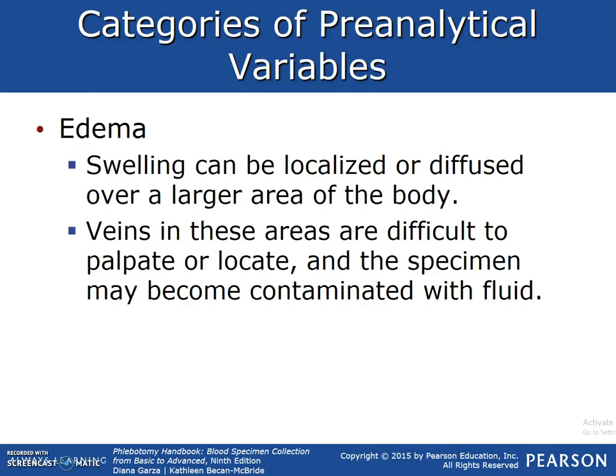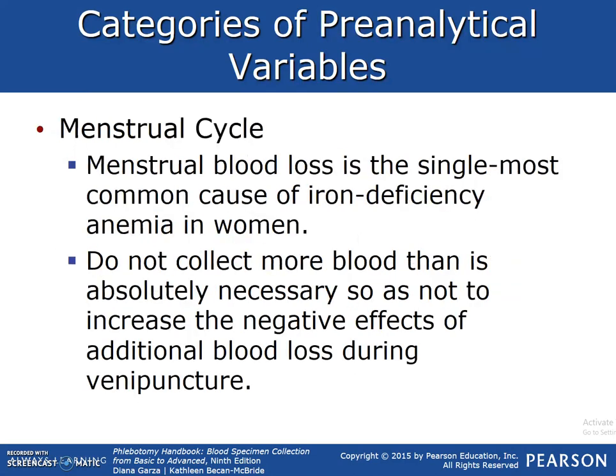Edema: swelling can be localized or diffused over a large area of the body. Veins in these areas are difficult to palpate or locate, and the specimen may become contaminated with the fluid. Menstrual cycle: menstrual blood loss is the single most common cause of iron deficiency anemia in women. Do not collect more blood than is absolutely necessary, so as not to increase the negative effects of the additional blood loss during venipuncture.